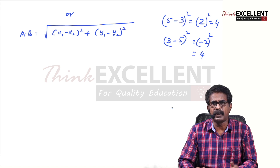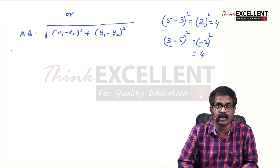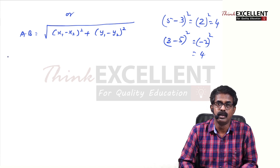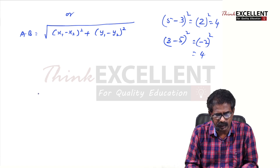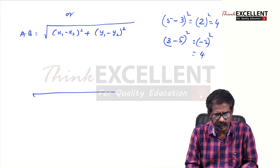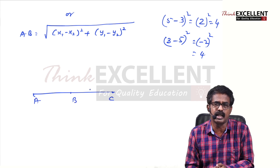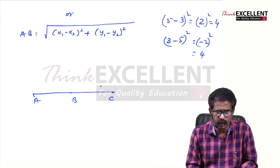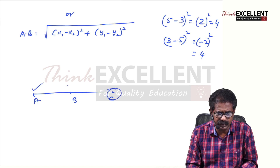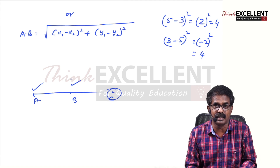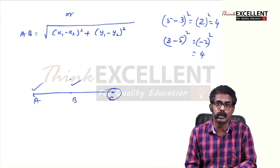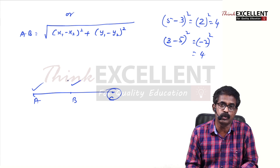There are various applications of section formula. Even collinearity you can prove using section formula. Suppose three points A, B, and C are given and they are collinear. It is enough to prove that point C divides AB in some ratio, internally or externally. If you are able to prove that, then you can say the three points are collinear.